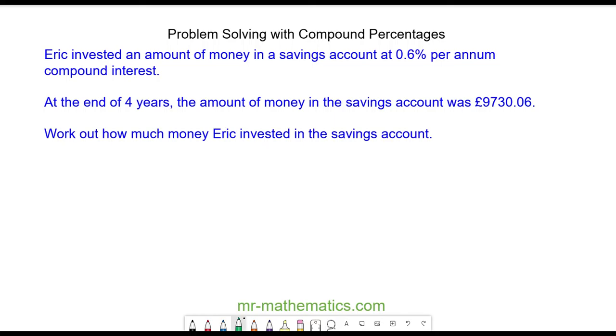Eric invested an amount of money in a savings account at 0.6% per annum compound interest. At the end of four years, the amount of money was worth £9,730.06. How much money did Eric invest in the savings account?